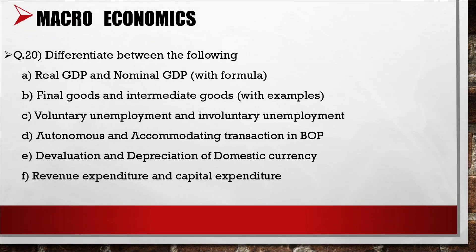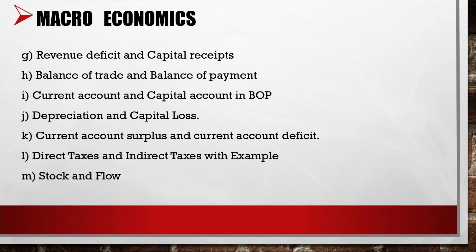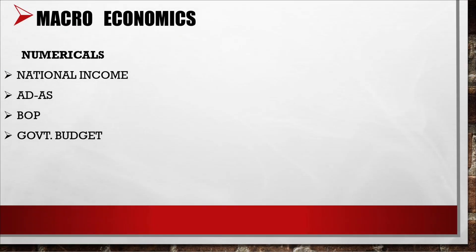Differentiate between: a. Real GDP and nominal GDP with formula; b. Final goods and intermediate goods with examples; c. Voluntary unemployment and involuntary unemployment; d. Autonomous and accommodating transactions in BOP; e. Devaluation and depreciation of domestic currency; f. Revenue expenditure and capital expenditure; g. Revenue deficit and capital receipt; h. Balance of trade and balance of payment; i. Current account and current account surplus versus current account deficit; j. Direct tax and indirect tax with examples; k. Stock and flow. Numericals will be based on national income, AD-AS, BOP, and government budget.